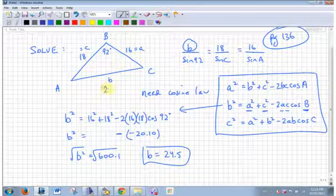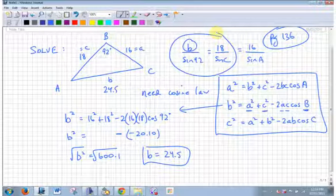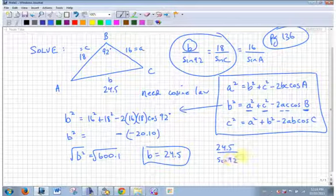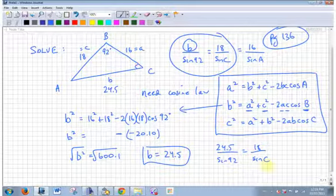It does say solve. But again, I can use sine law. I know what B is. Let's go back up there, put that in for B over sine 92. Hopefully you all could do this on the quiz. Let's now find angle C.